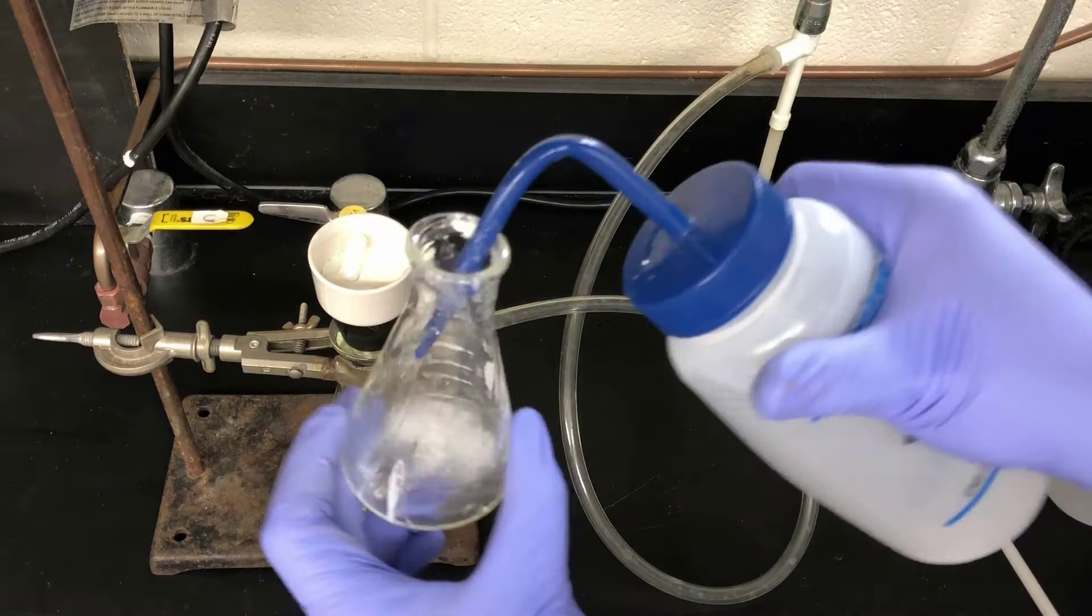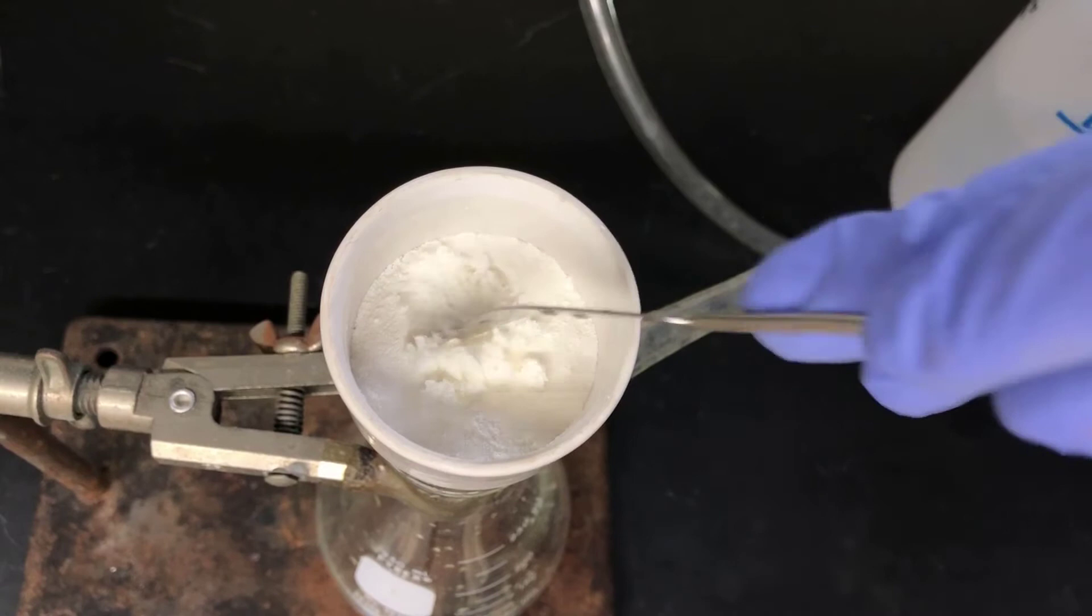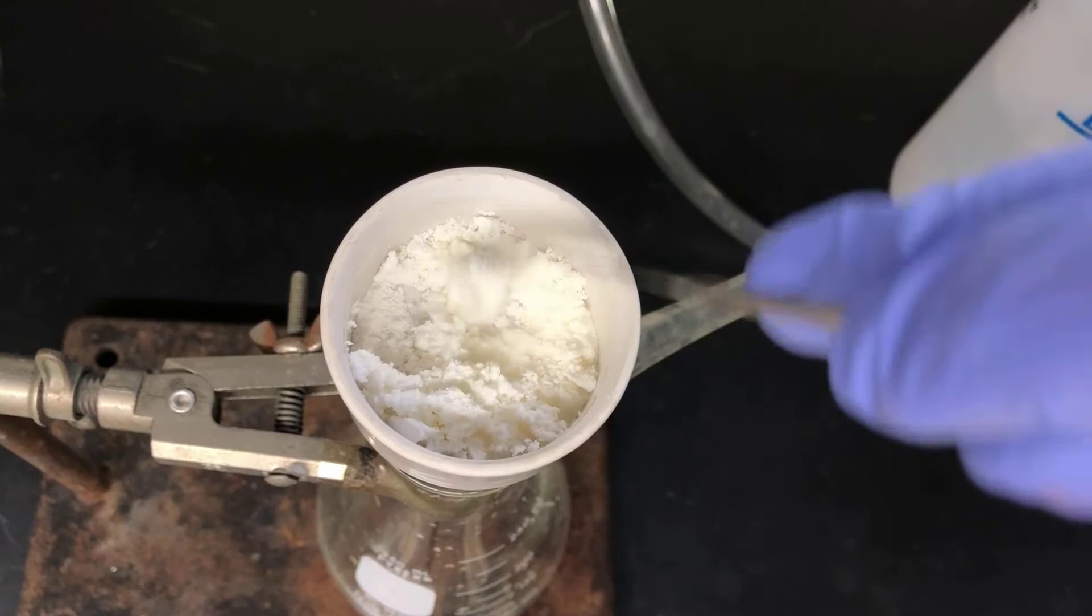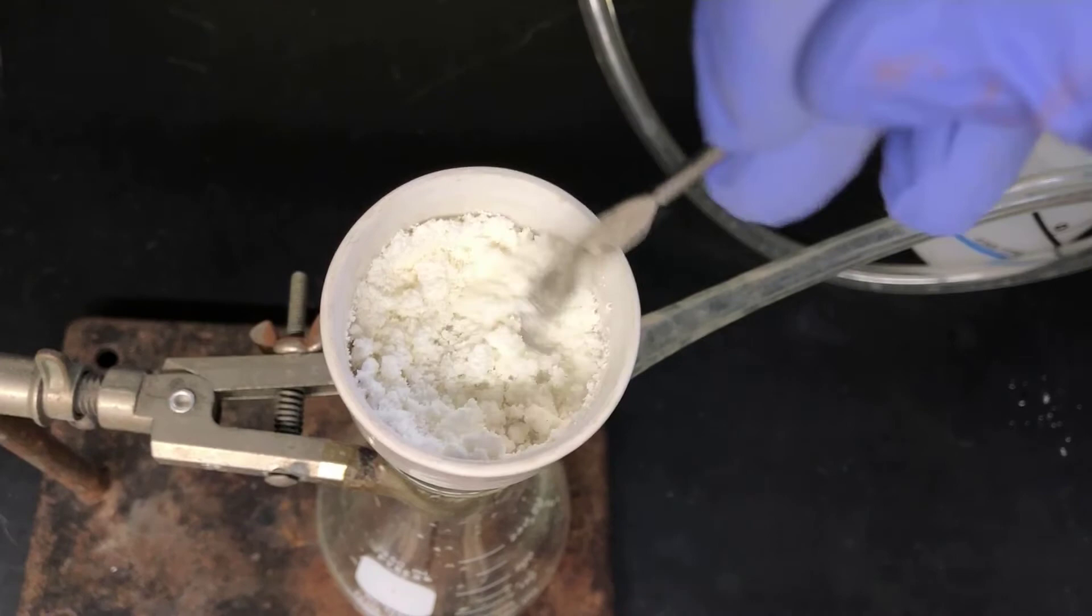Here's a close-up view of the product in the Buchner funnel. It's a white powder, but it's still wet with water. Ideally, it should be completely dry before you attempt to get a mass on it and a melting point. The best-case scenario is to let it dry in your drawer over a week and then take the melting point the following week. If you can't do that, then pull a vacuum over the product like this for about 15 minutes or so to get it as dry as possible. If there's any water left on it, that'll act as an impurity and depress your melting point and probably broaden its range.